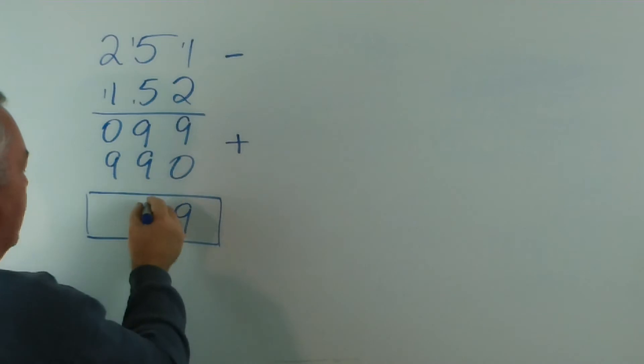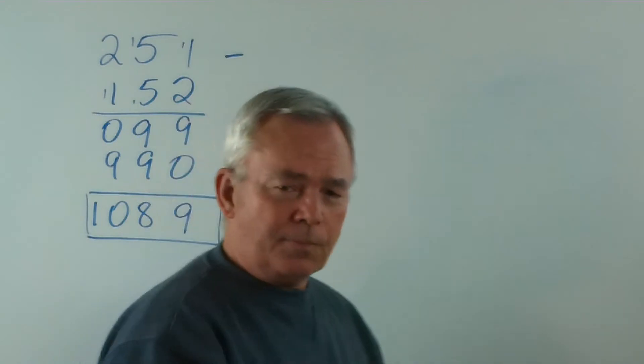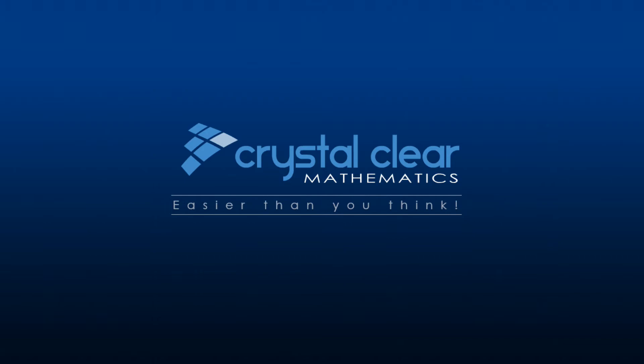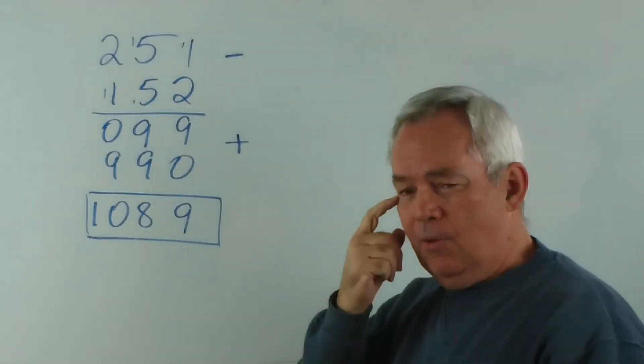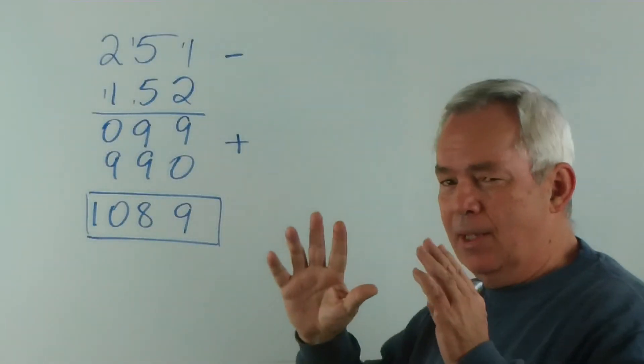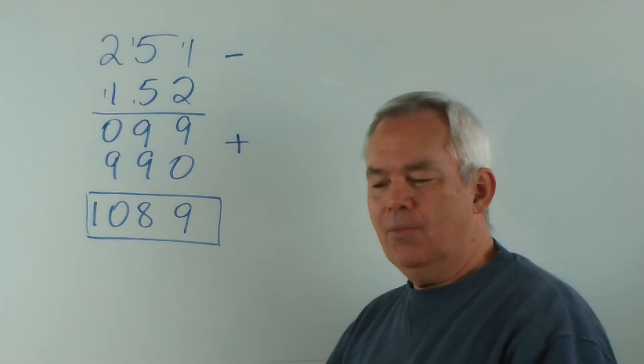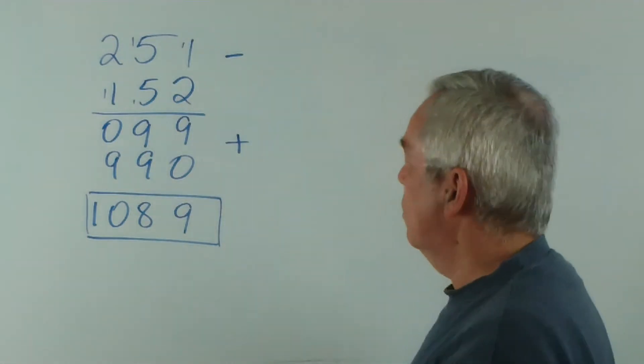9 and 9 is 18 carry the 1... 1 and 9 is 10... there it is... 1089... remarkable property... why does this happen? Well, if you've watched the last video... I'm not going to go through the explanation again... so I'm talking about... the video in which we... I predict with coins in my pocket... what your answer will be...